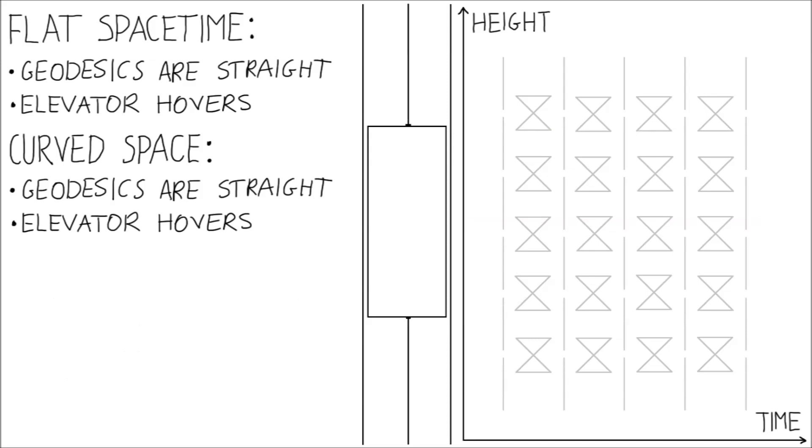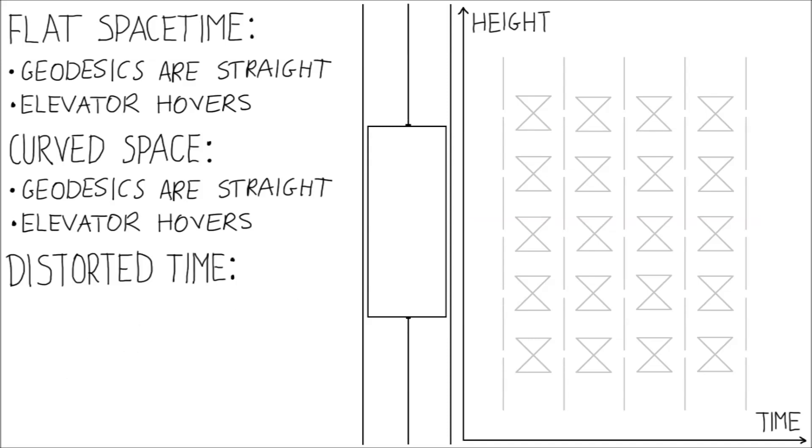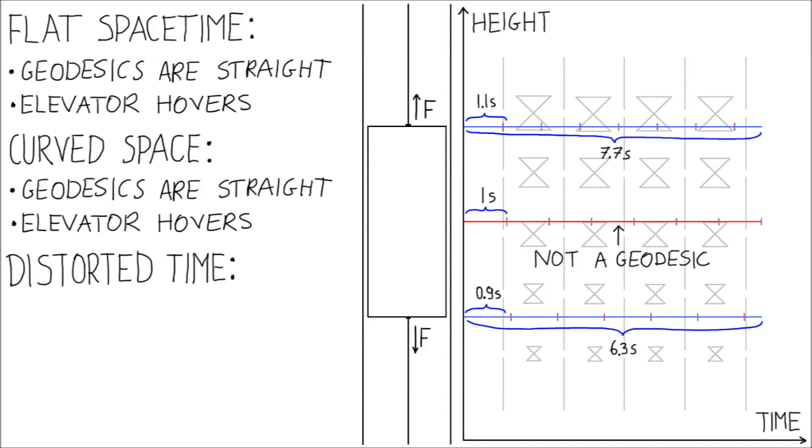Finally, let's say that the space is flat but the time flows slower closer to the surface. After one second passes in the middle of the elevator, say 1.1 seconds pass at the top and only 0.9 seconds pass at the bottom. If the elevator keeps on hovering, the top part of it travels further in spacetime than its bottom part and so staying put is no longer a geodesic. We need forces to hold the elevator in place.